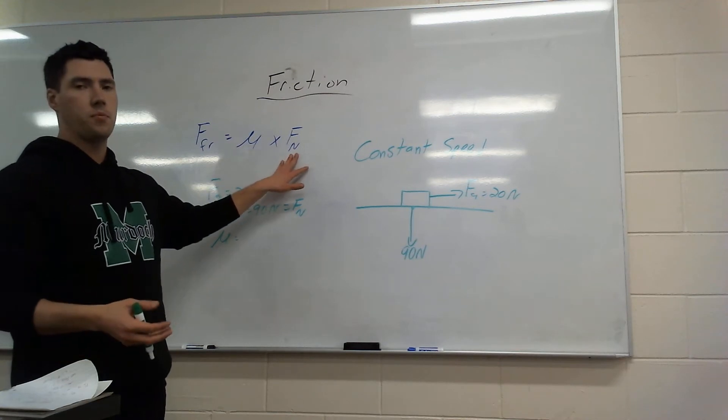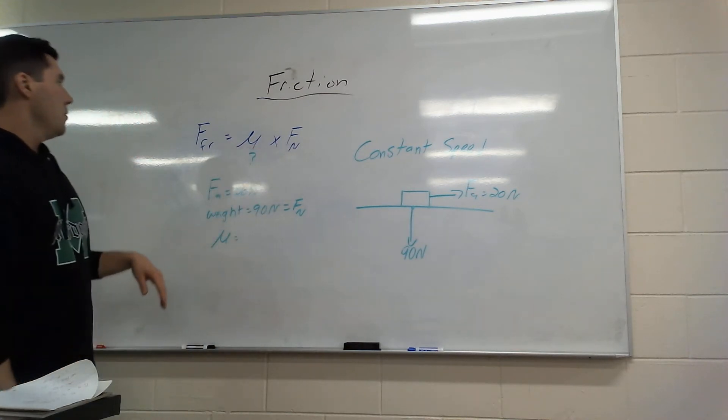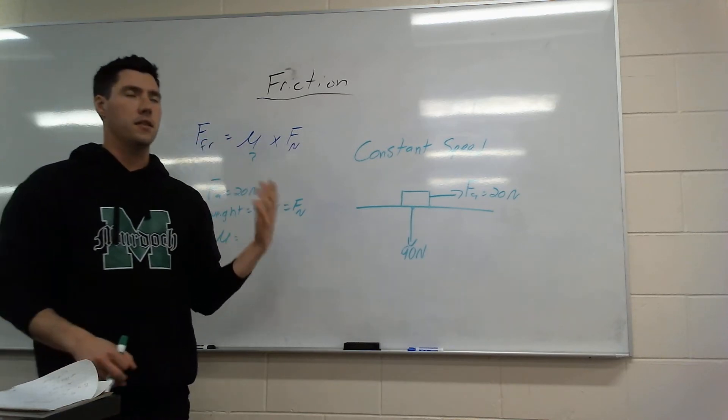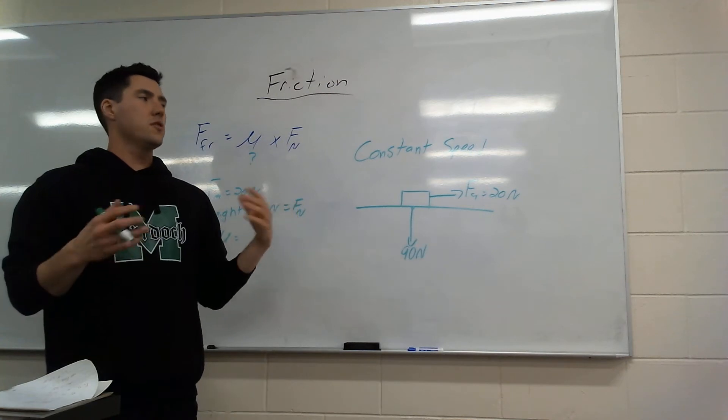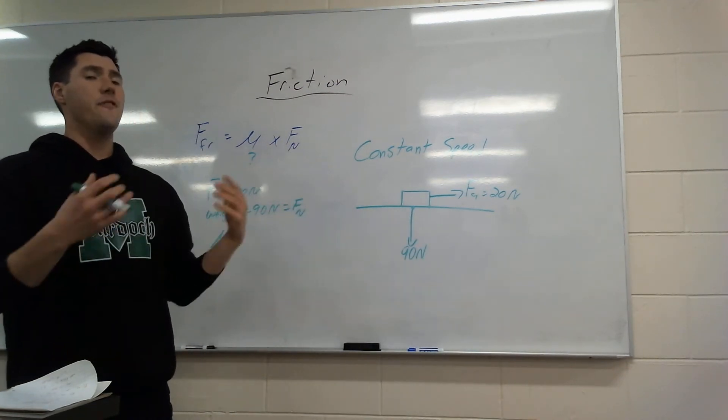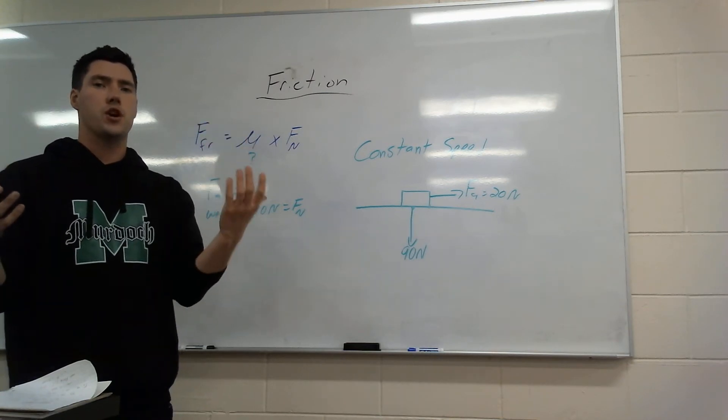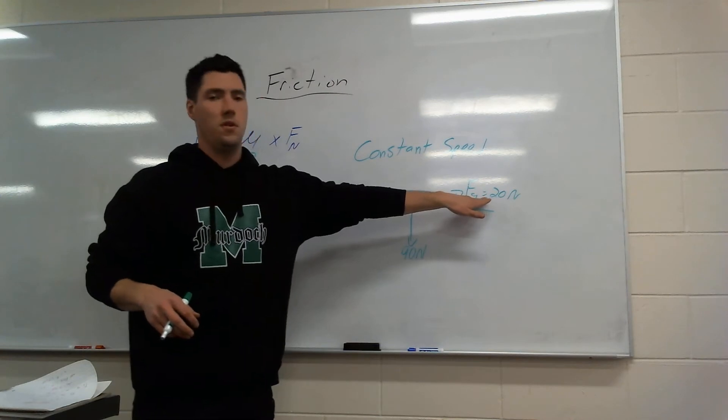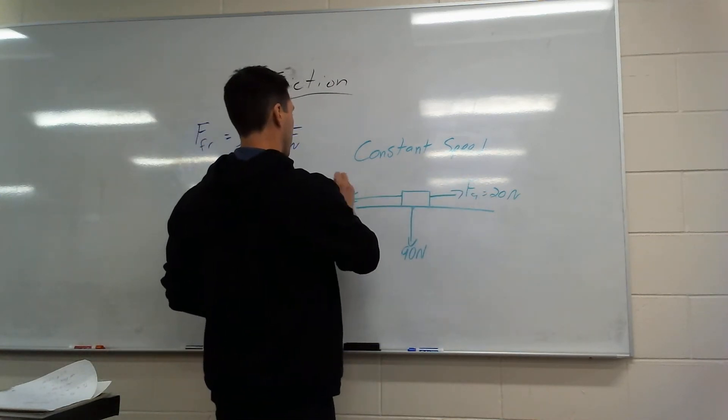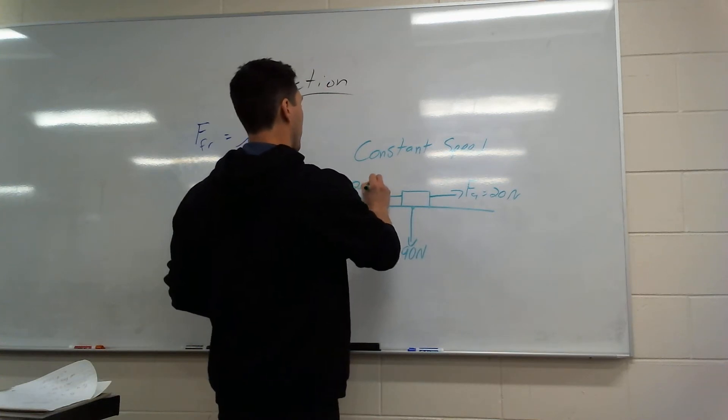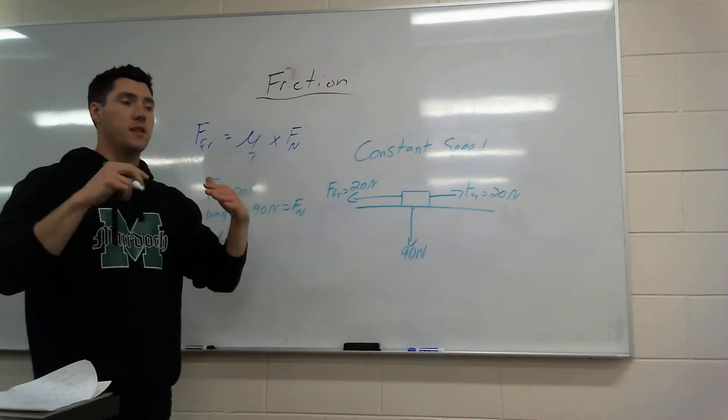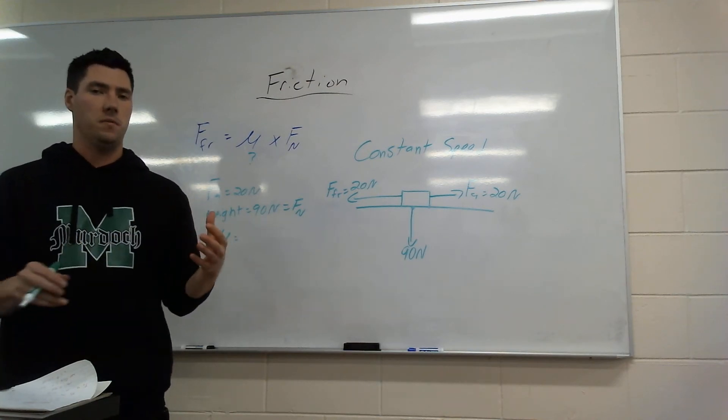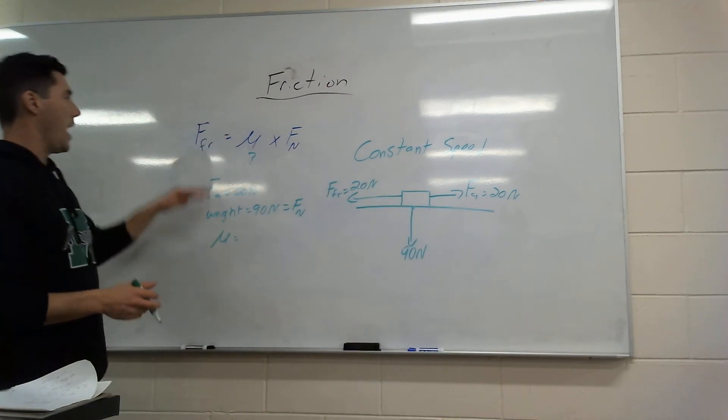We have a force normal, we're trying to find mu, but we have no force of friction. So how can I figure out this problem with no force friction? If you remember in the last video, I mentioned constant speed at a specific point. If we have constant speed, that means our force applied and our force of friction have to be canceling out. They have to be the same, because that means there's no acceleration at all. So if I have a force applied of 20 newtons and a constant speed, that means my force of friction also has to be 20 newtons.